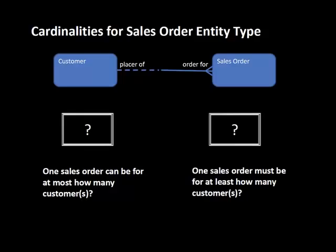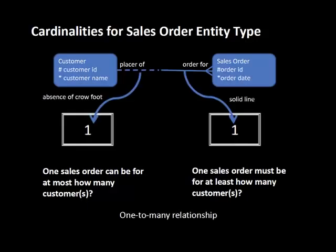The upper limit is indicated on the customer entity. The upper limit is one because there is no crowfoot. Upper limit is crowfoot or no crowfoot; lower limit is dashed or solid. Because there is no crowfoot, the upper limit is one. So both the lower and upper limits for sales order are one.